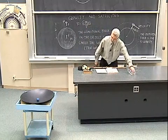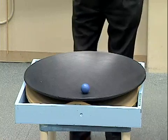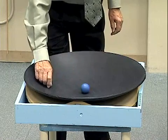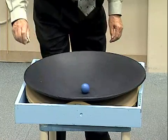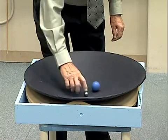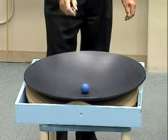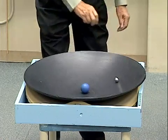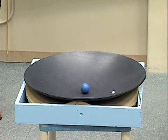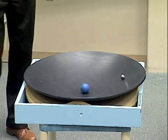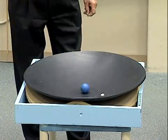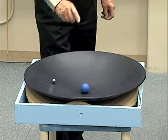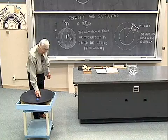Another model of that would be this dish here. If I have the satellite up here and release it, the force will cause it to fall straight in toward the planet. However, if we give it a horizontal velocity at just the right speed, we can get that satellite to move in a near circular orbit. Again, it's the force of the dish pushing in on the satellite that supplies the centripetal force to keep that satellite from moving off in a straight line and to maintain its circular motion.